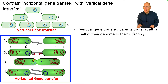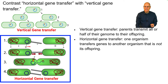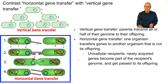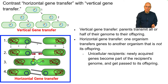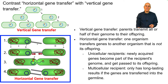Horizontal gene transfer is quite different. In horizontal gene transfer, one organism transfers genes to another organism that is not its offspring. This bacterium is transferring genes on this loop of DNA to a second bacterium. In unicellular recipients, the newly acquired genes become part of the recipient's genome. When this bacterium reproduces, it'll pass on the newly acquired genes to its offspring. In a multicellular recipient, there are only intergenerational results if the genes are transferred into the germline.